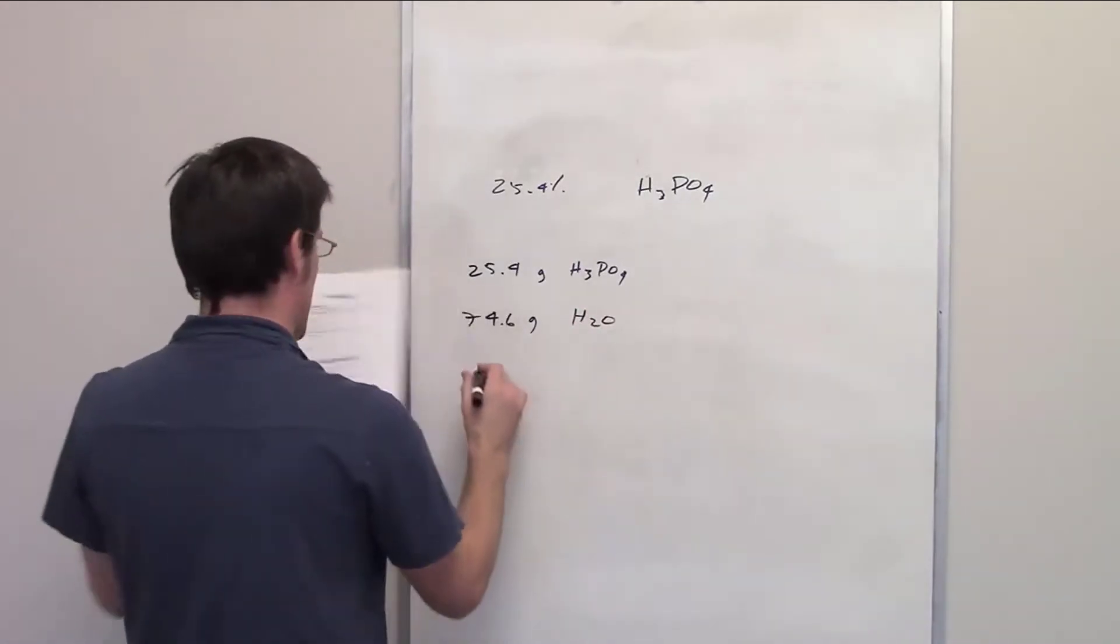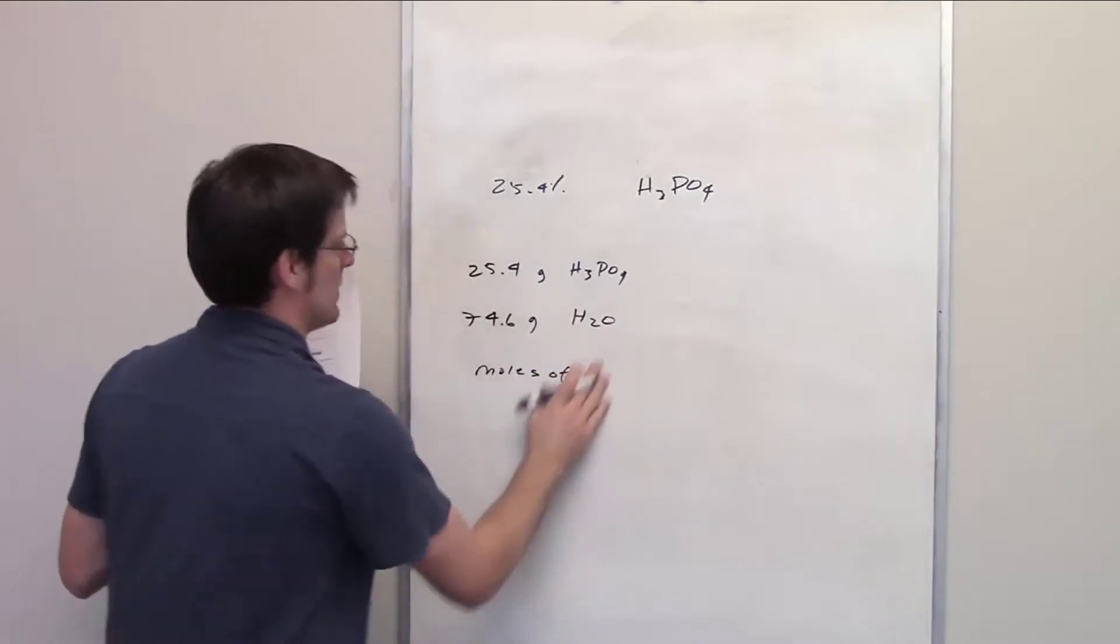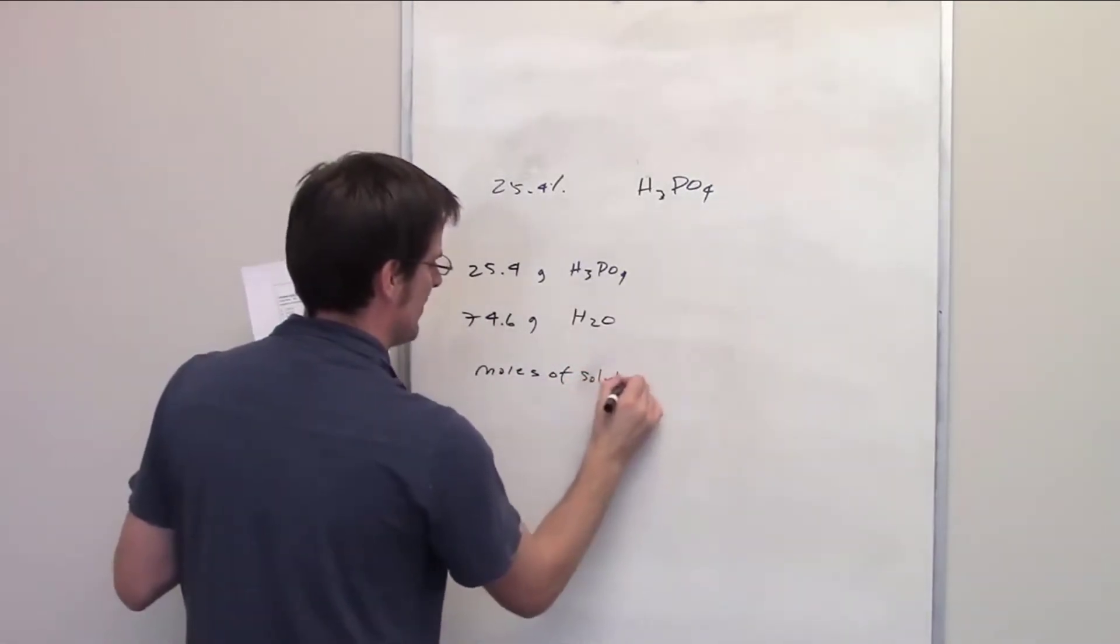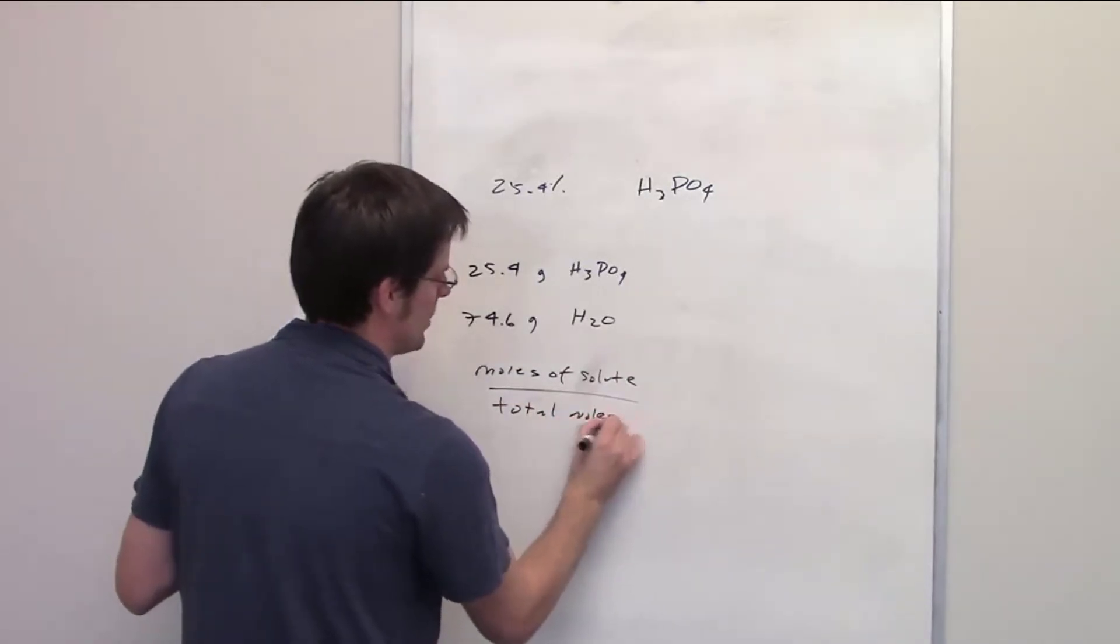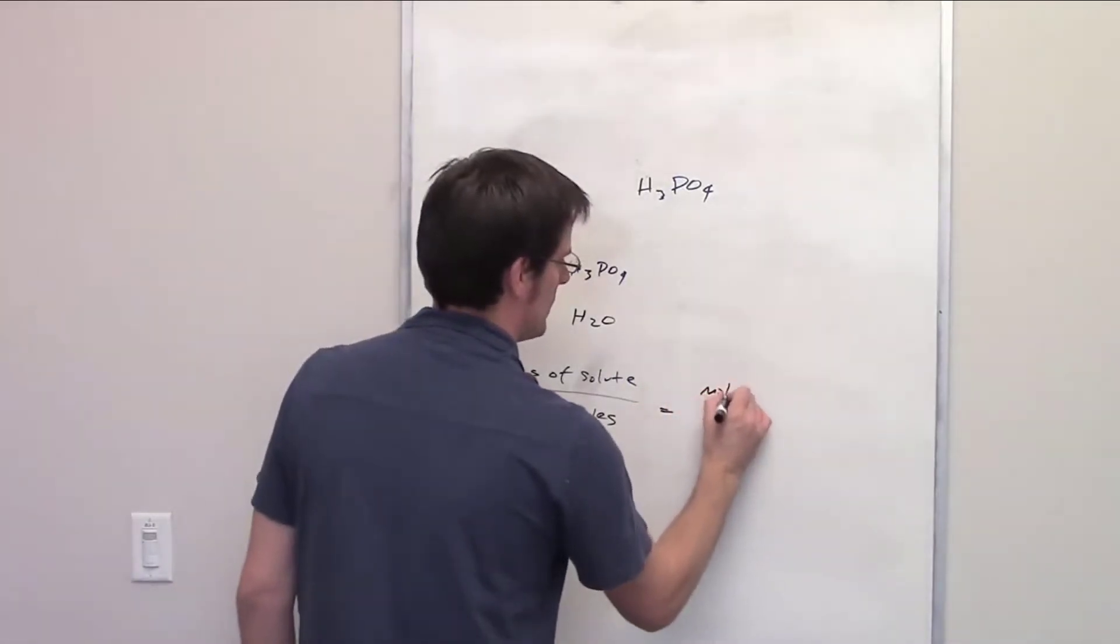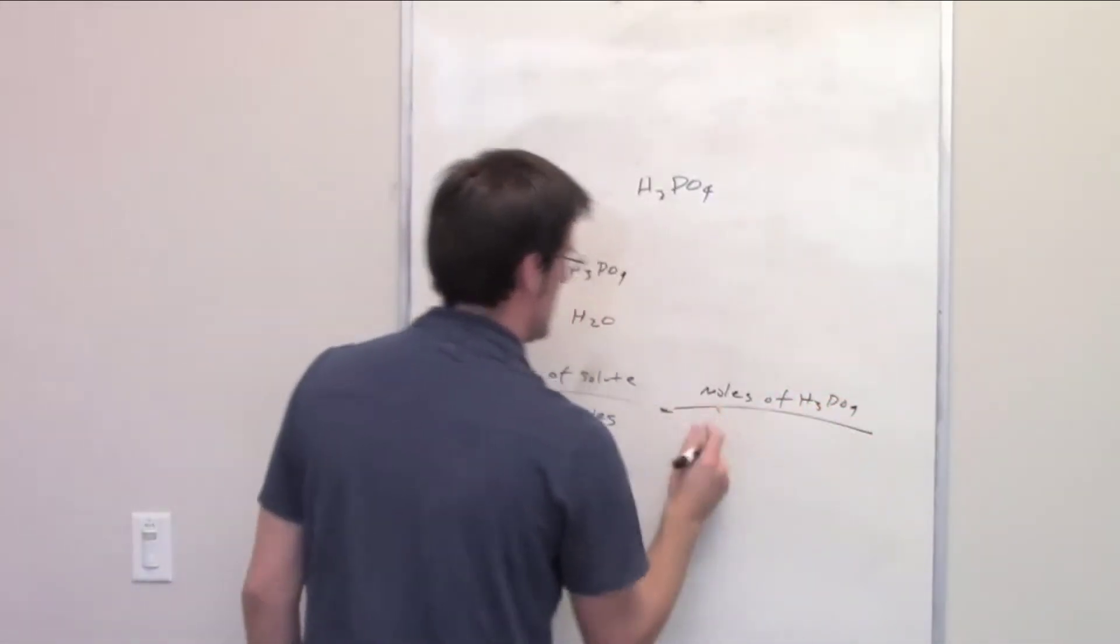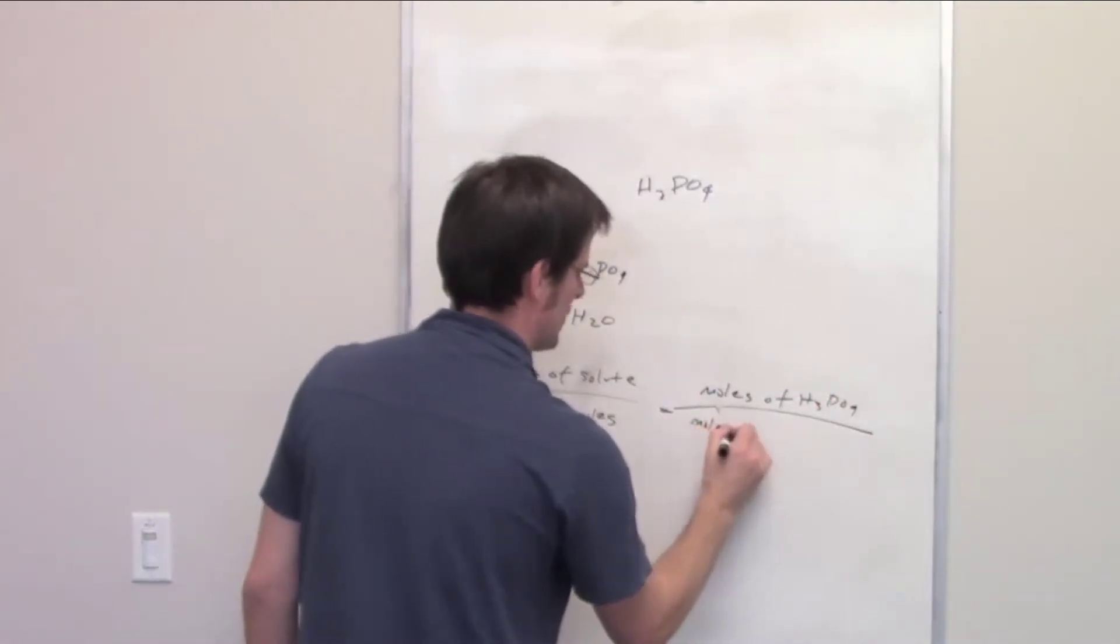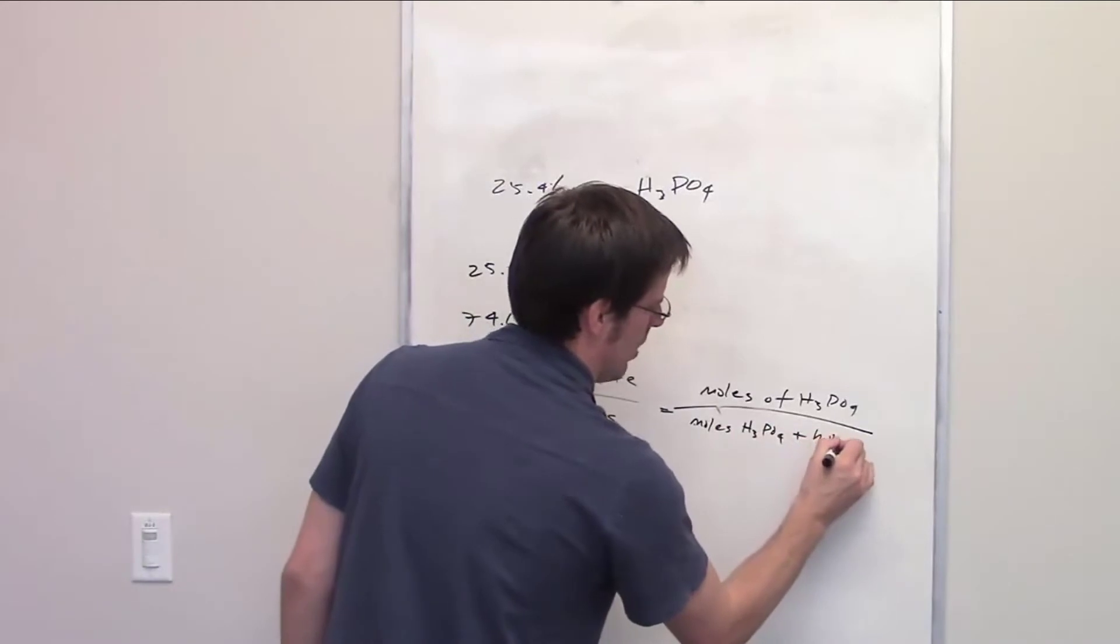Mole fraction is moles of solute divided by total moles. Total moles is going to be moles of solute plus the moles of the solvent. In this case, we're going to do moles of phosphoric acid divided by moles of phosphoric acid plus moles of water.